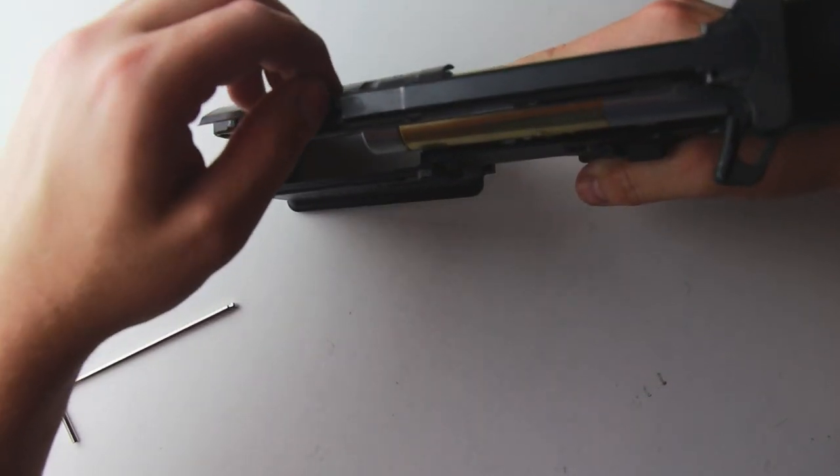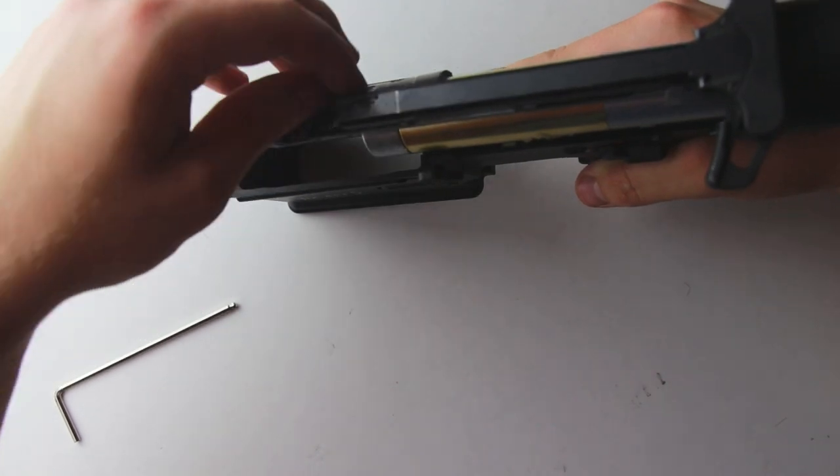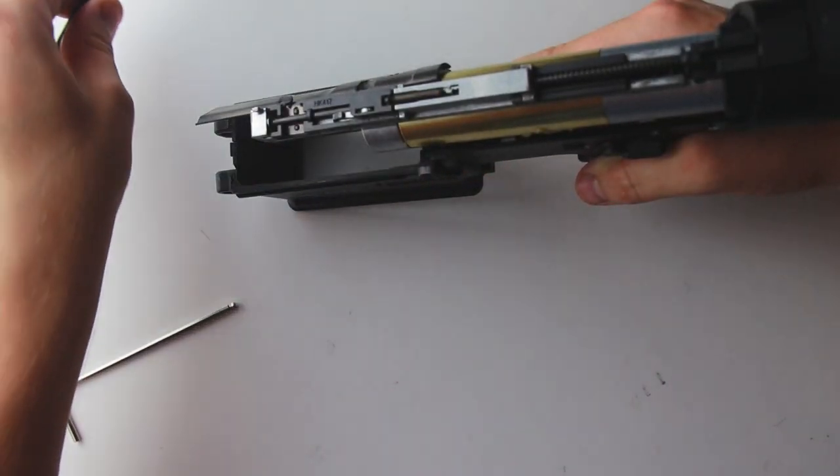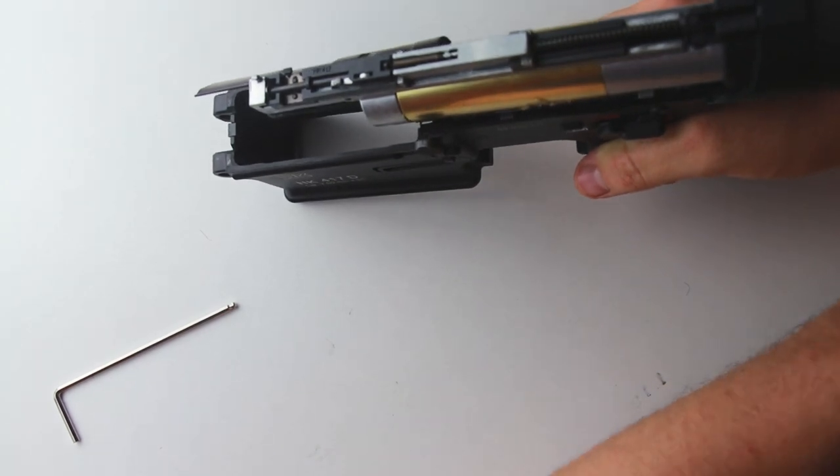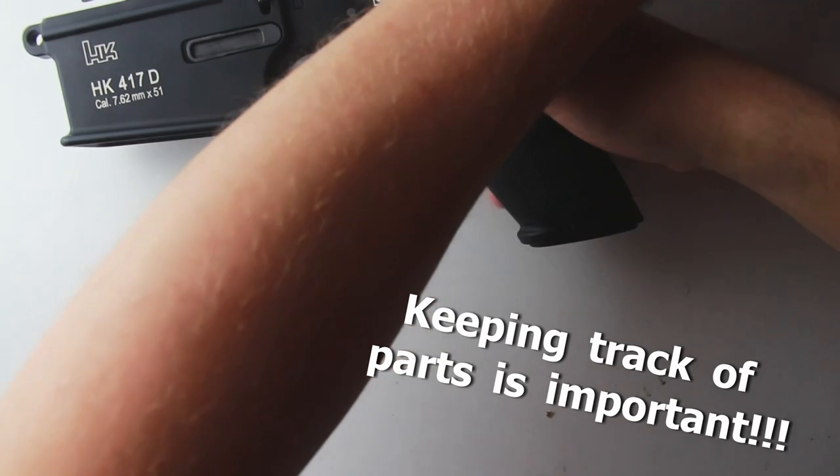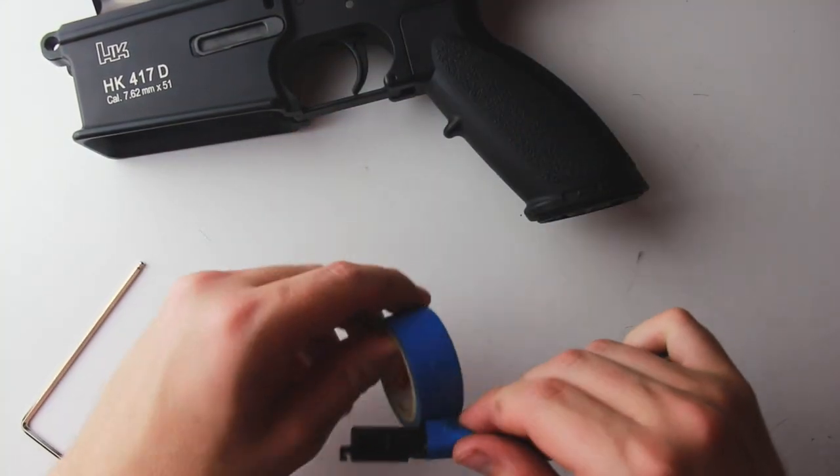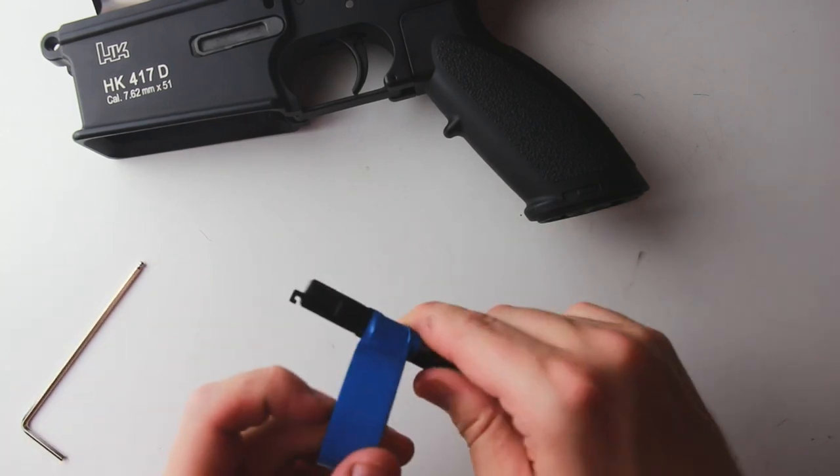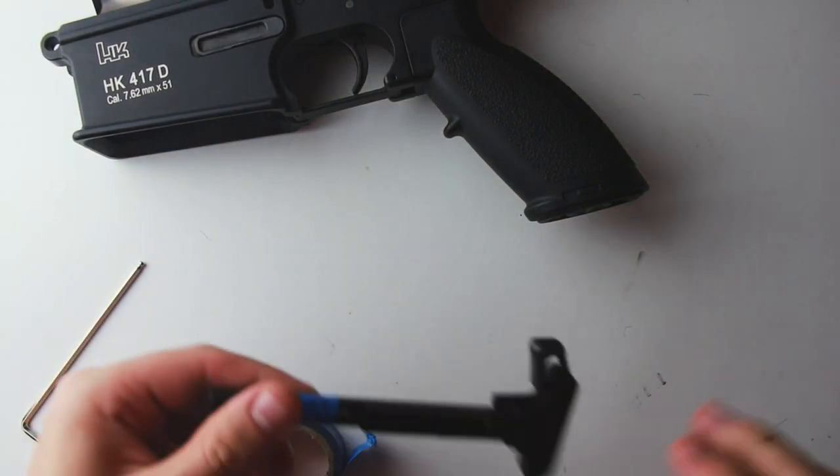Now we haven't got anything to do in there because the hop and the barrel is Tokyo Marui magic so we'll leave that be. When they say don't run a TM recoil stock on 11-1s they mean don't run a TM recoil stock on 11-1s. So we've learned that lesson now.